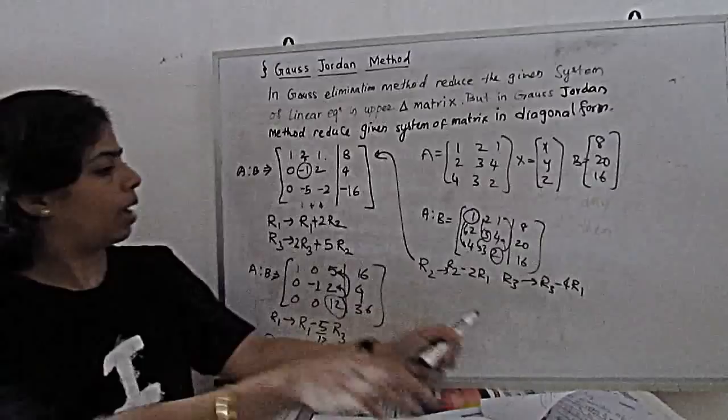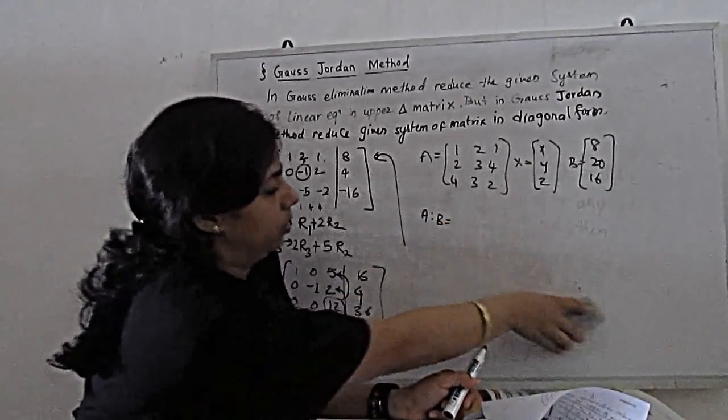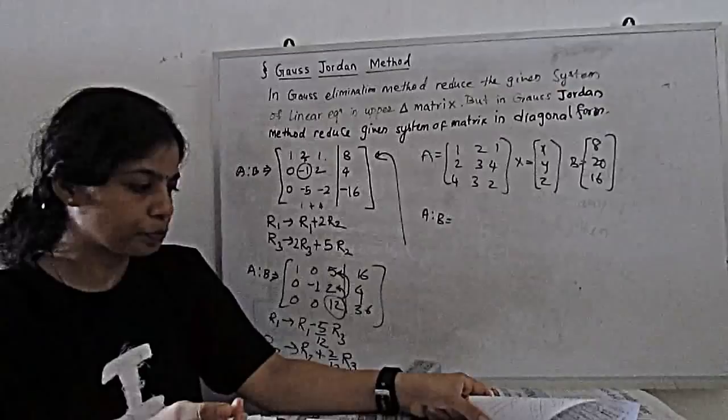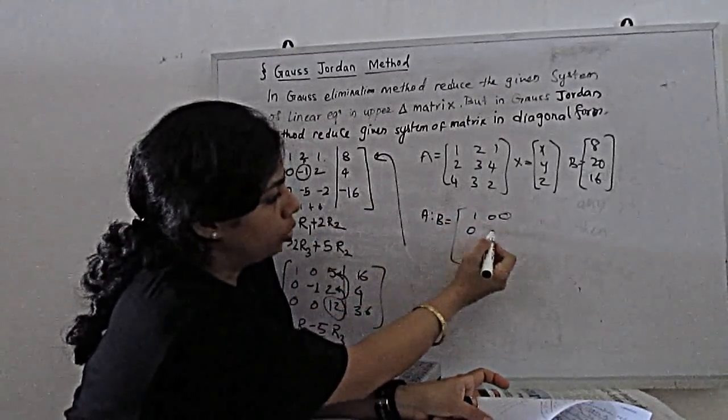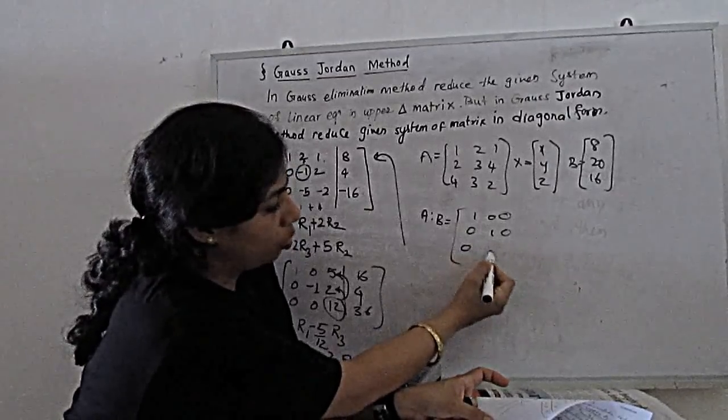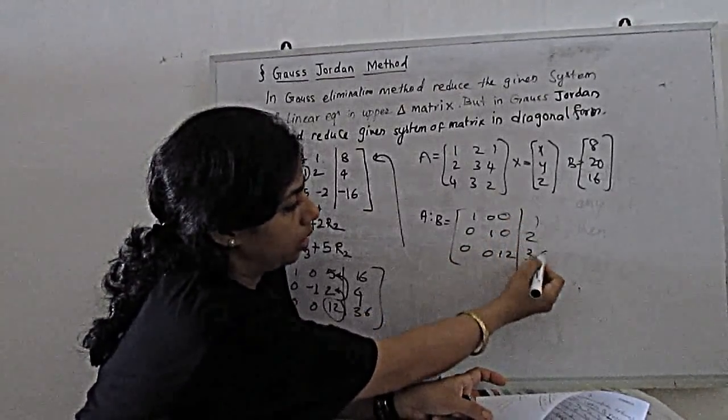Operation is this. When we apply the operation, our new arrangement is like this. So my new matrix become 1, 0, 0, 0, 1, 0, 0, 0, 12, 1, 2 and 36.